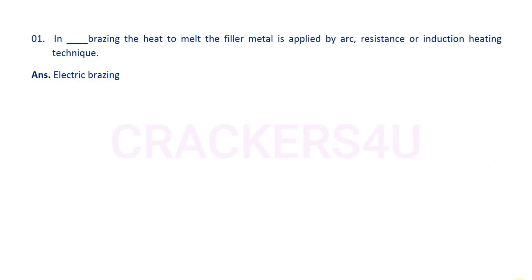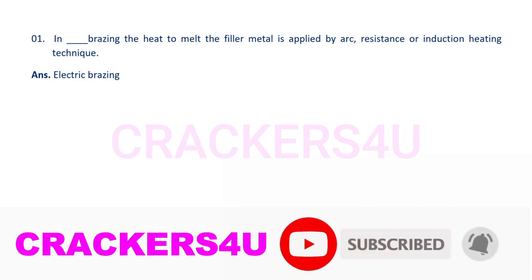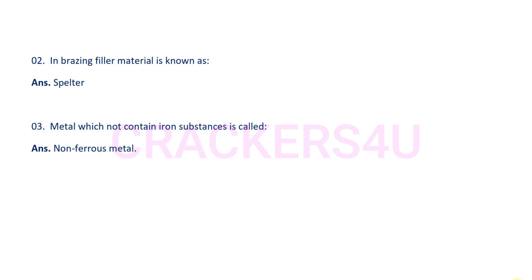Question 1: In dash brazing, the heat to melt the filler metal is applied by arc, resistance, or induction heating technique. Answer: Electric brazing. Question 2: In brazing, filler material is known as. Answer: Spelter.